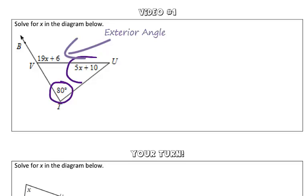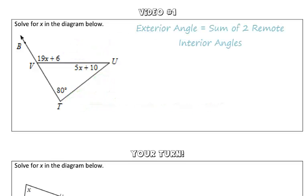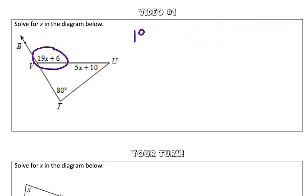And we're also given the measure of the two remote interior angles, which is 80 and 5x plus 10. So what we learned in class is that the exterior angle is equal to the sum of the remote interior angles. So what that means is that this angle right here, 19x plus 6, or the measure of angle BVU, is equal to the sum of these two remote interior angles. So it's equal to 5x plus 10 plus 80.